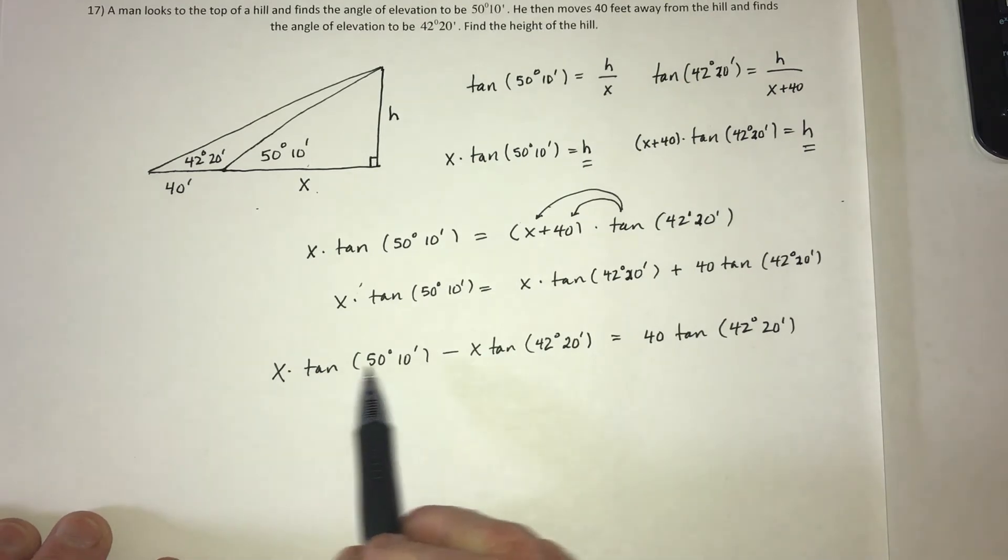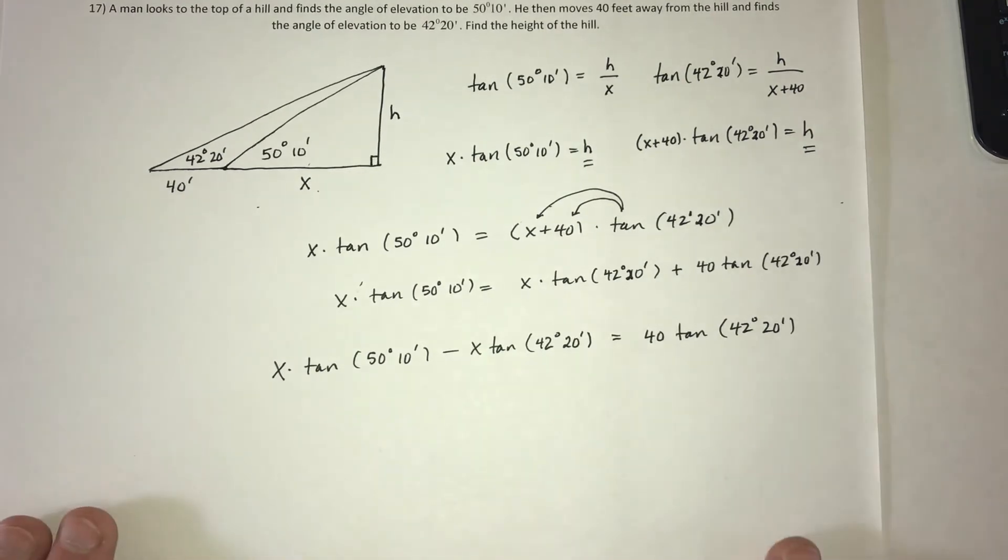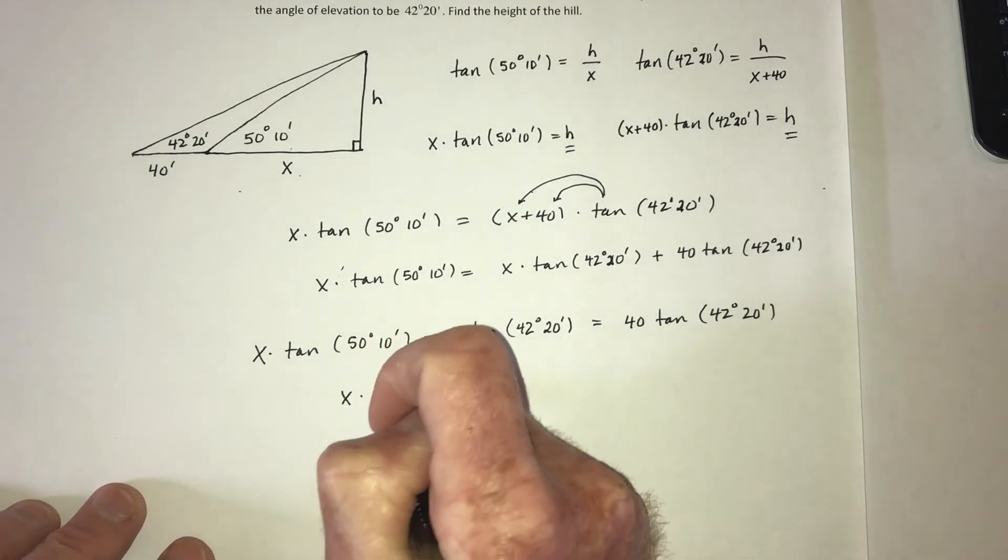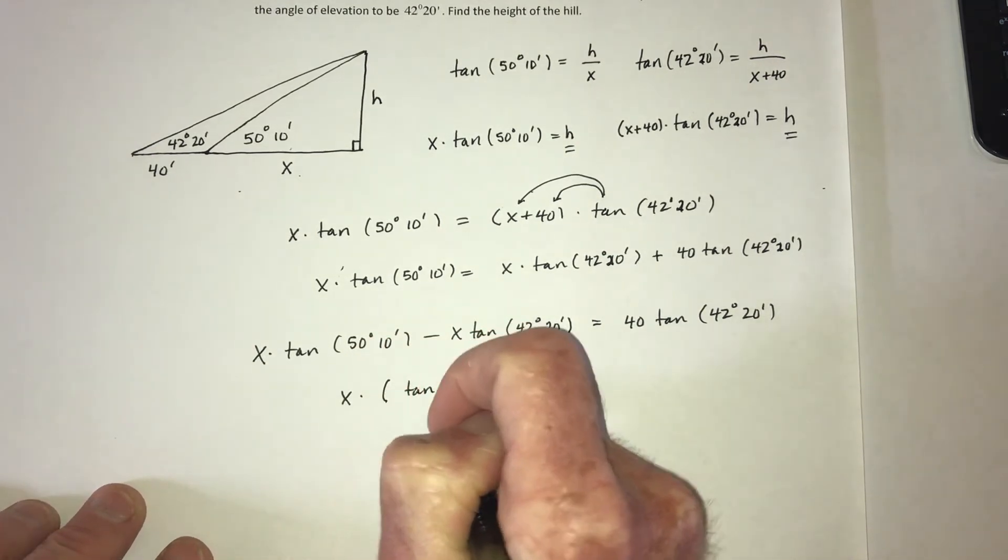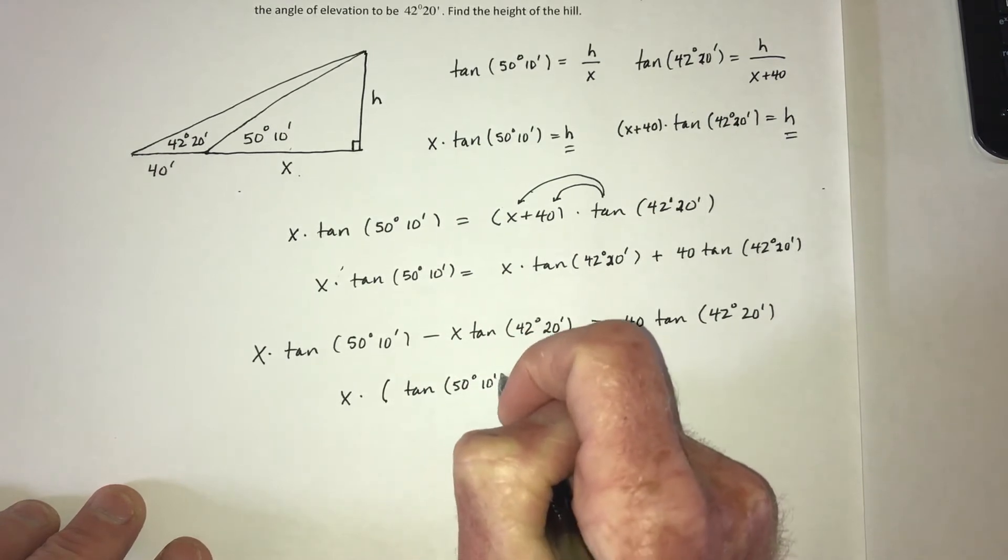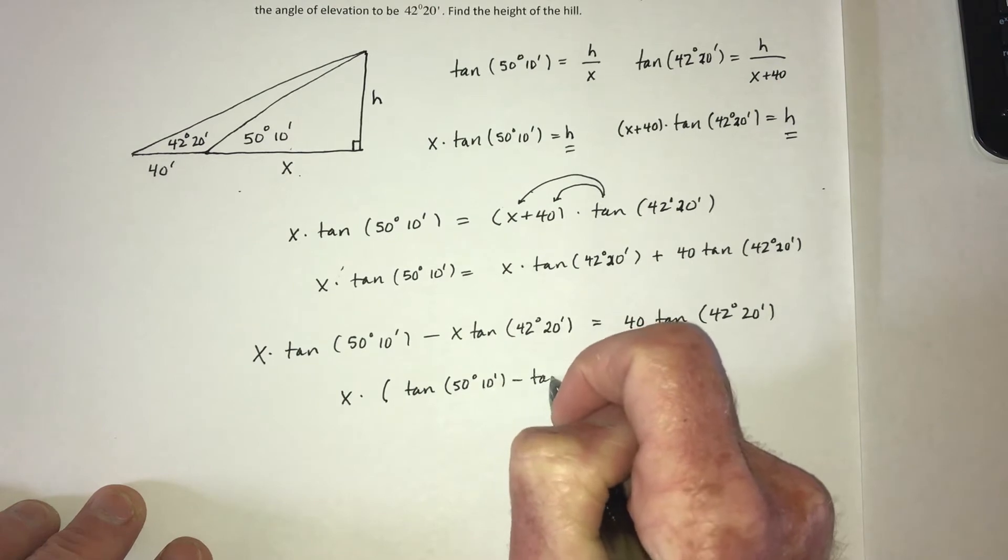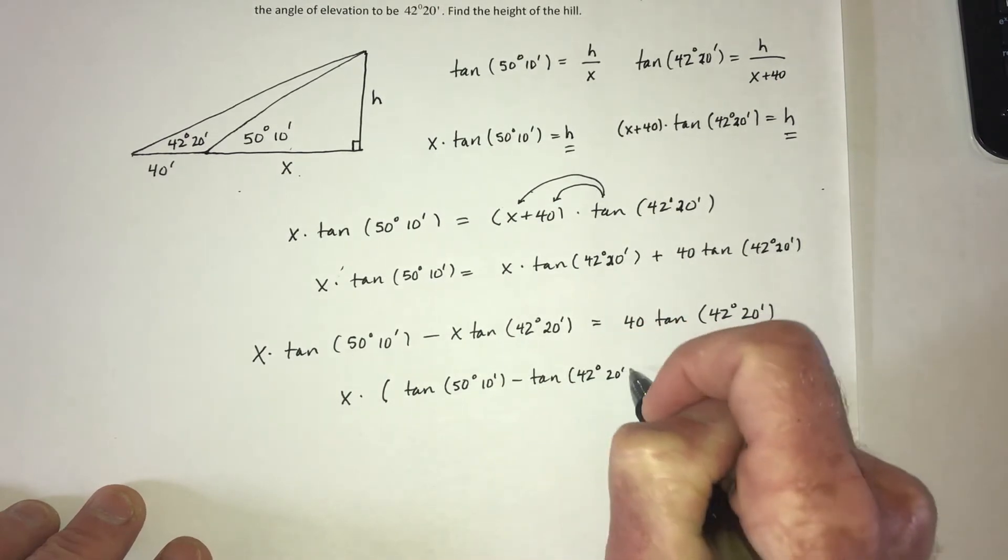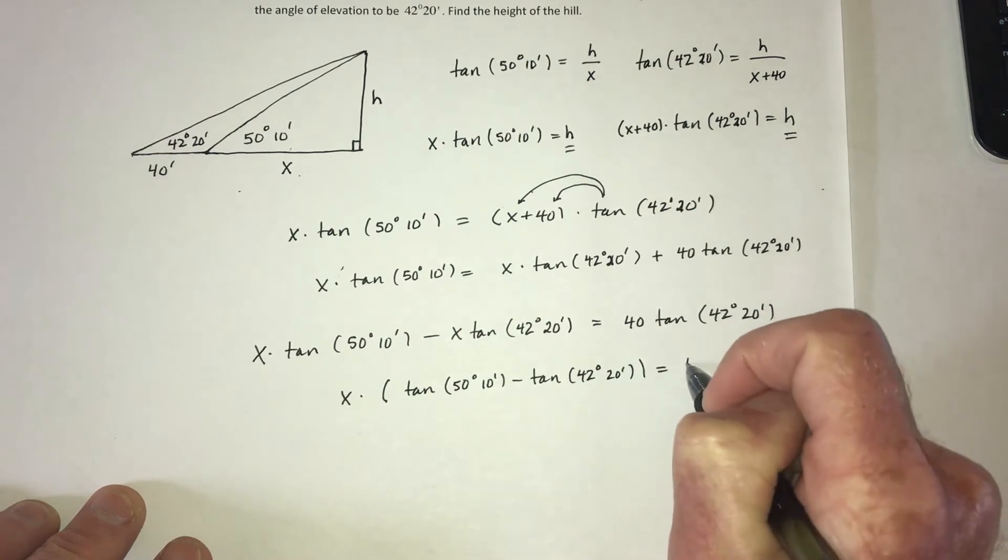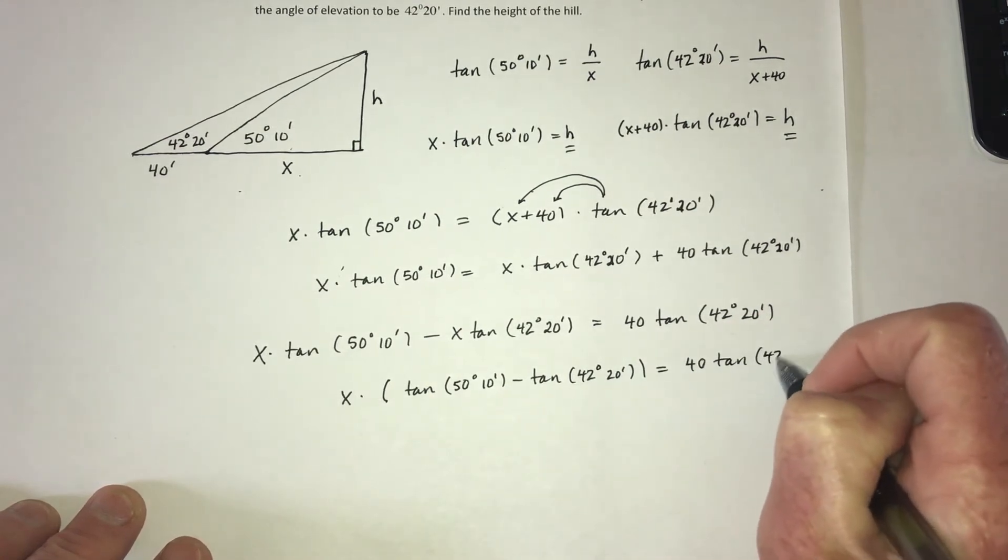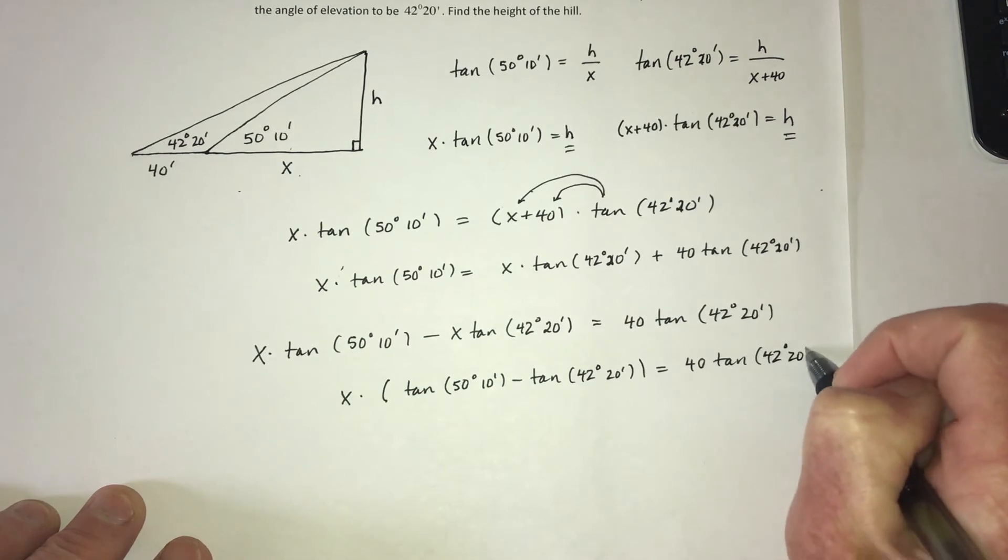And then we only have two more steps. One is, since this has x and this has x, then you could factor out the x. So it would leave tangent of 50 and 10 minus tangent of 42, 20. And then the right side, just copy it down.